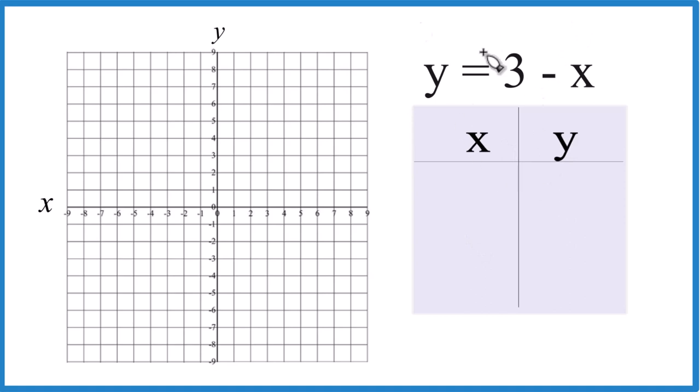So we'll put values in for x, get a value for y, then we'll graph it, and we'll get the graph for y equals 3 minus x.